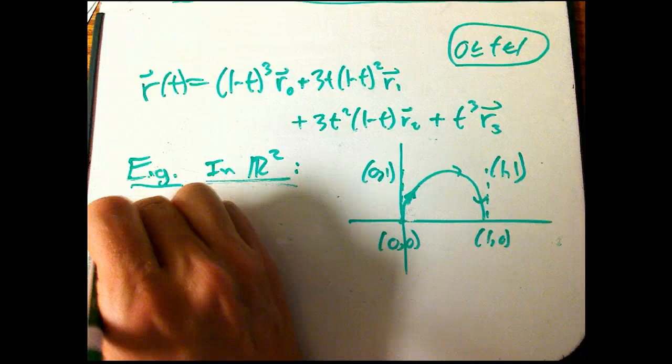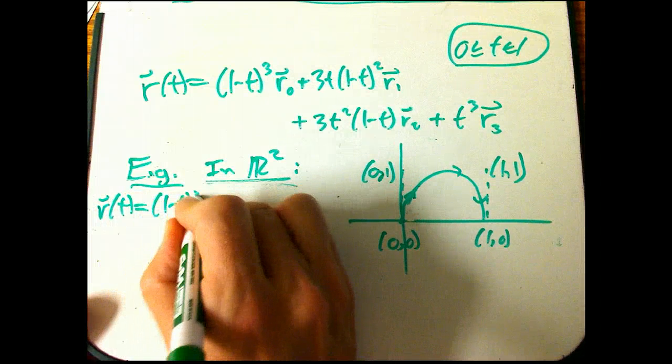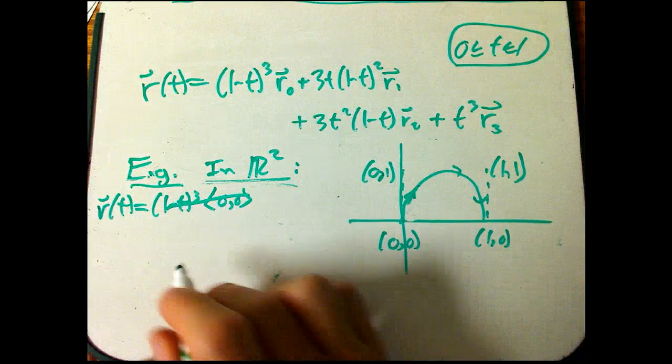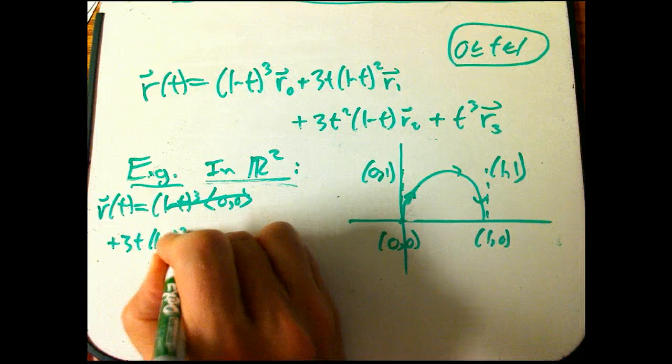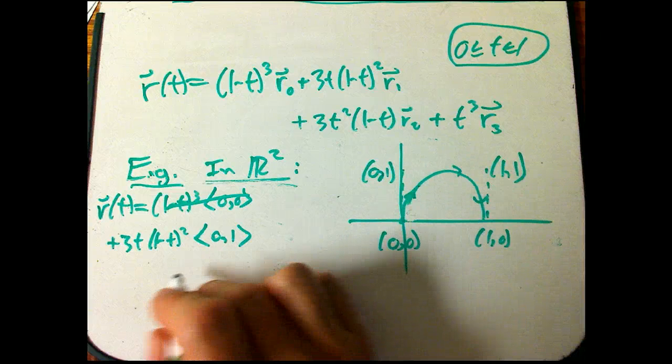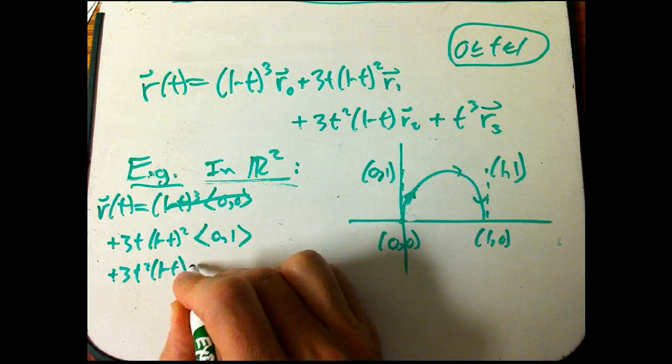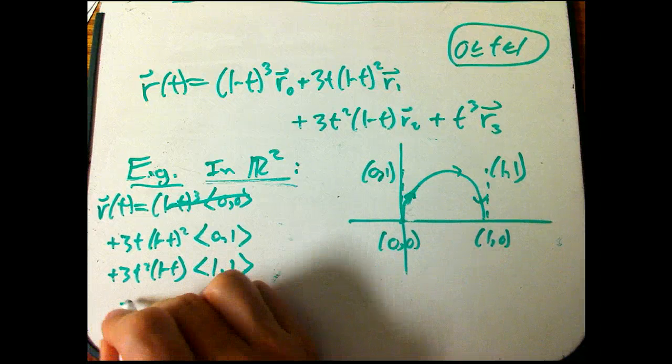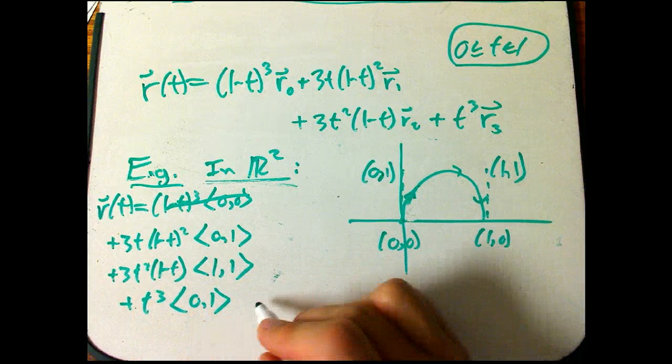So let's just write it down. R of t, it's 1 minus t cubed times the vector 0, 0, which happens to die because I'm starting at the origin. Plus 3t times 1 minus t quantity squared times 0, 1, that other control point there. Plus 3t squared, 1 minus t, times 1, 1, plus t cubed, 0, 1.